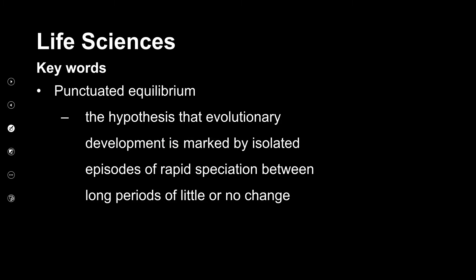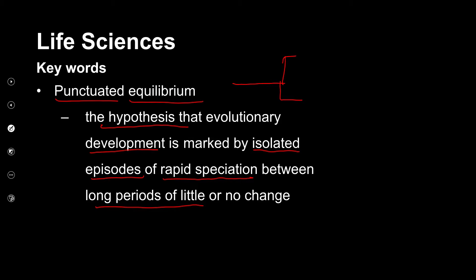Another theory we're going to look at is punctuated equilibrium — actually, it's a hypothesis that evolutionary development is marked by isolated episodes of rapid speciation between long periods of little or no change. This is where the term punctuated comes from. Punctuated means that there are breaks in between, and equilibrium means balance or equal.